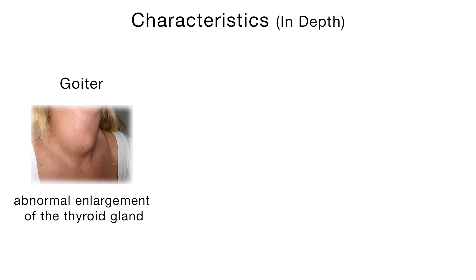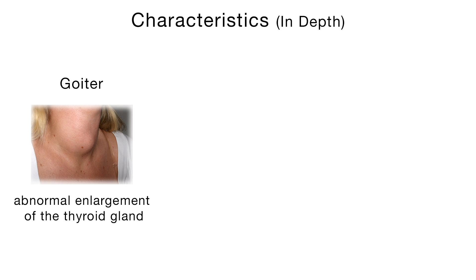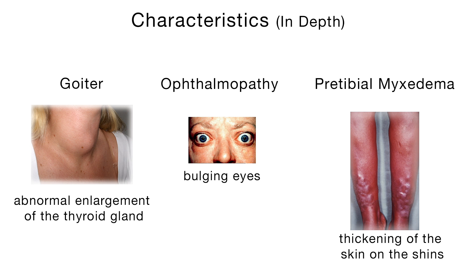In addition to the signs and symptoms of hyperthyroidism, Graves' disease has some specific characteristics. A goiter, which is an abnormal enlargement of the thyroid gland that is smooth and diffuse. Graves' ophthalmopathy, which are bulging eyes, also known as proptosis. And pre-tibial myxedema, which is thickening of the skin on the shins.